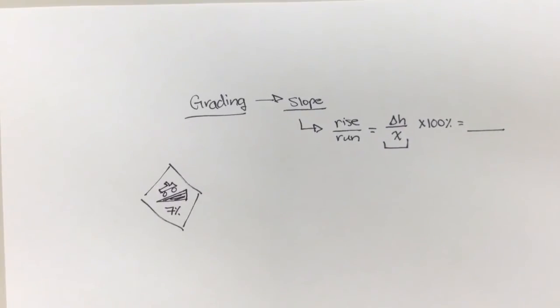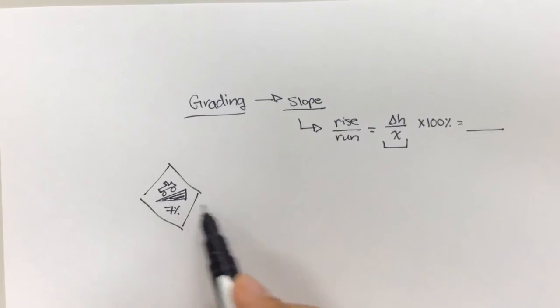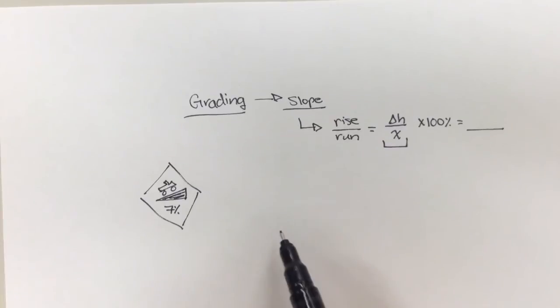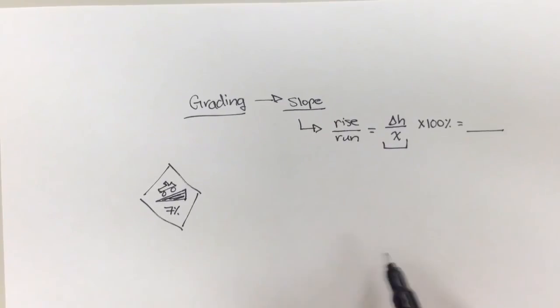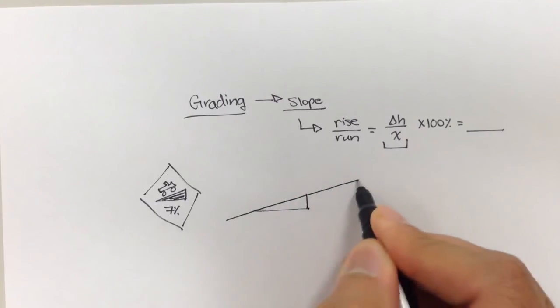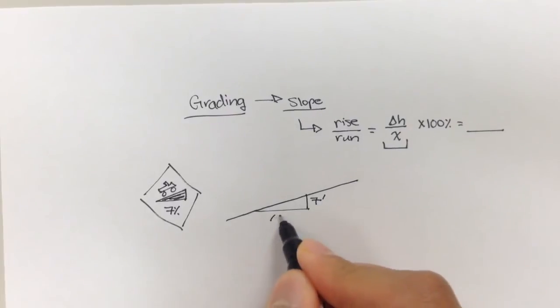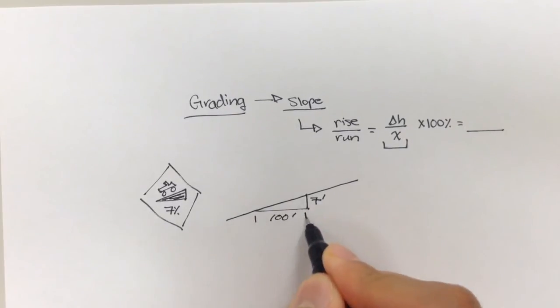Well, 7% grade, what does this actually mean? What this means is that if the grade is 7%, then that means this particular road that you're driving on, and in this case it's going uphill, this line rises 7 feet for every 100 feet in distance. In other words, this line that you're driving on is going to rise 7 feet for every 100 feet traveled.